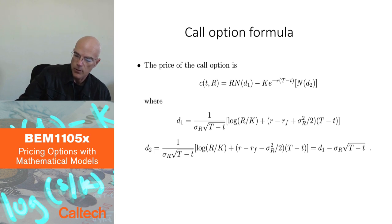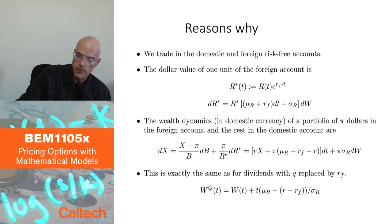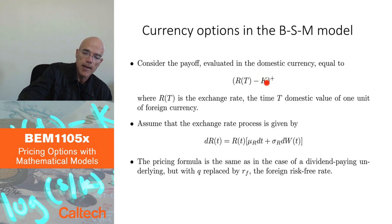So we now know in the Black-Scholes-Merton model how to price a call option on a unit of foreign currency. Because that was really an option to buy a unit of foreign currency. Why? Because you pay K if the exchange rate at that time is higher than K, you are happy to pay K to buy, let's say, 1 euro, instead of buying at the market price, which at that time is R of capital T. So you can think of this as a call option on an exchange rate or a call option on one unit of foreign currency. It's the same thing.